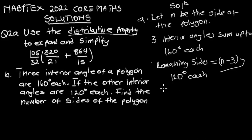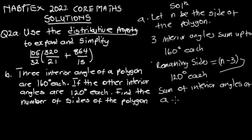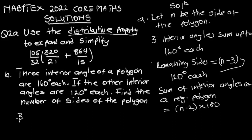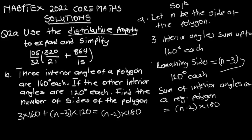The sum of interior angles of a polygon is (n minus 2) times 180 degrees. So we set up the equation: 3 times 160 plus (n minus 3) times 120 equals (n minus 2) times 180, where the left side accounts for all angles — the three 160-degree angles and the remaining (n minus 3) angles of 120 degrees each.